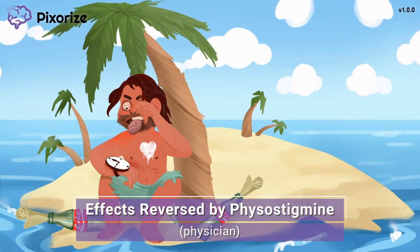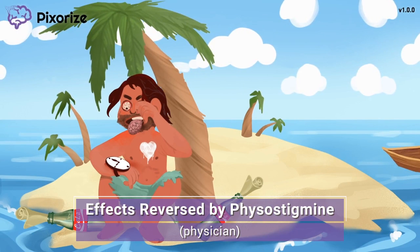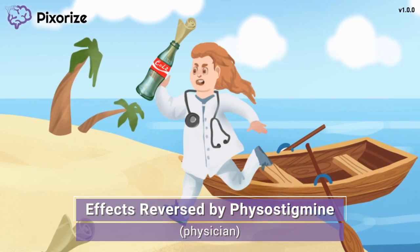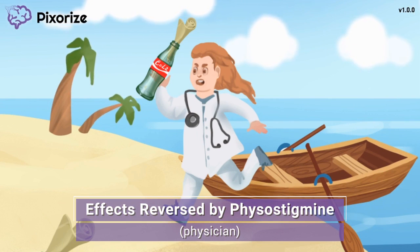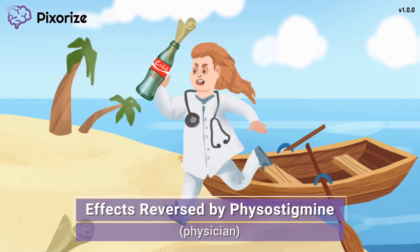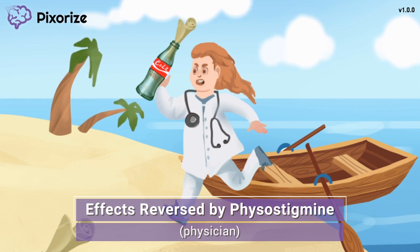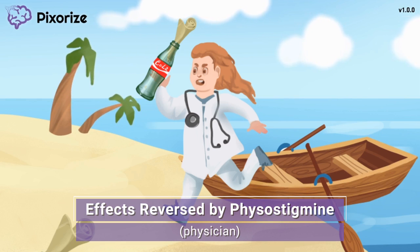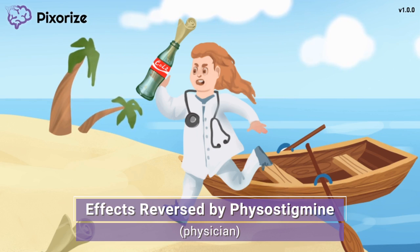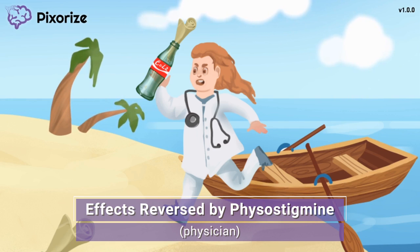After all these messages in bottles were sent out to sea, our deserted guy finally had a stroke of luck. Notice the physician running over to rescue him from his tropical nightmare. This physician is our symbol for physostigmine, the antidote for atropine poisoning. Since this physician is going to end our tropical adventure, this will help you remember that physostigmine reverses or stops the effects of atropine. Some people even call this physostigmine rescue, which is fitting because the physician is the one rescuing our dehydrated man.